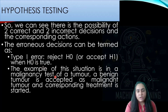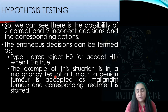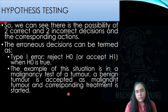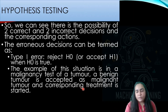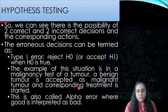An example of a Type 1 error occurs in a malignancy test of a tumor. In this case, a benign tumor is accepted as a malignant tumor and corresponding treatment is started. A benign tumor is not cancerous and a malignant tumor is cancerous. So by your testing you proved the tumor is benign, yet you started treatment by considering it cancerous — that is not a good thing. Type 1 error is also called alpha error, where good is interpreted as bad.